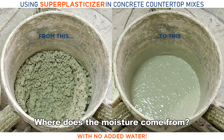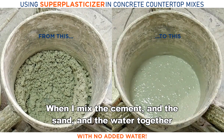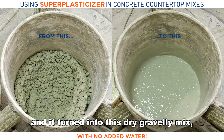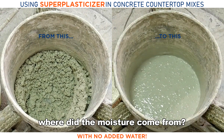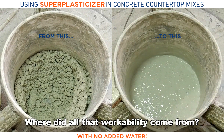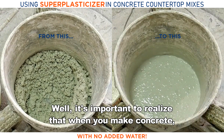So how does it do that? Where does the moisture come from? When I mixed the cement and the sand and the water together and it turned into this dry, gravelly mix, where did the moisture come from? Where did all that workability come from?